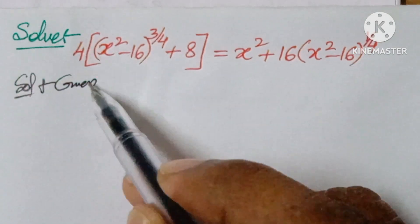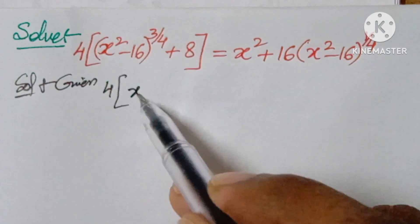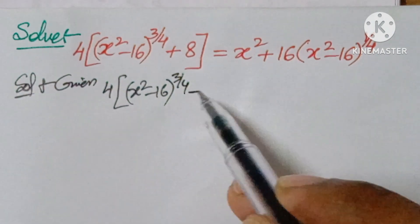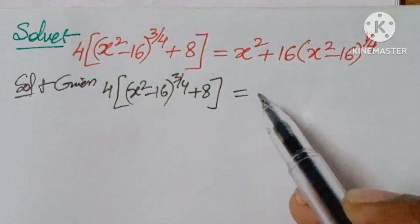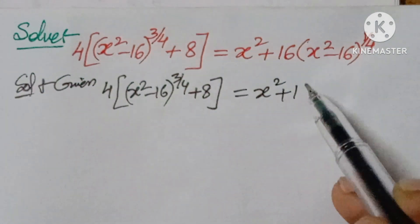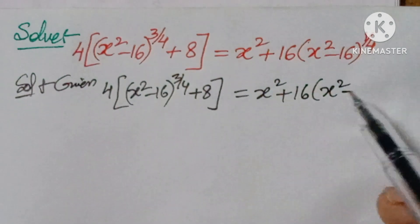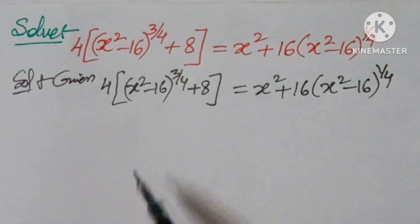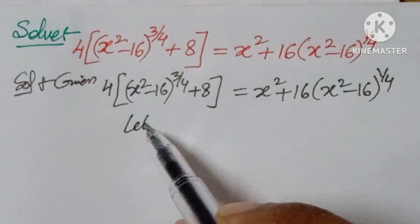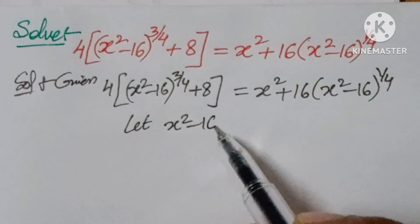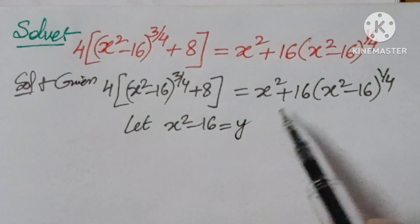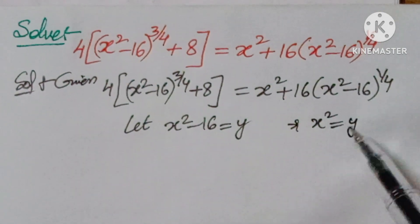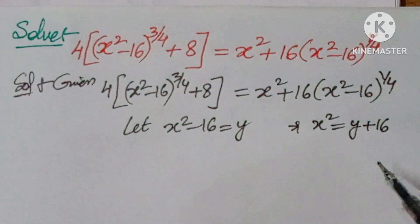Given: 4 into (x squared minus 16) to the power of 3/4 plus 8 equals (x squared plus 16) into (x squared minus 16) to the power of 1/4. The logic here is: let x squared minus 16 equal y, then x squared equals y plus 16.